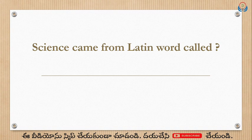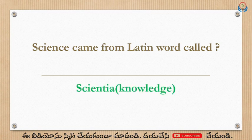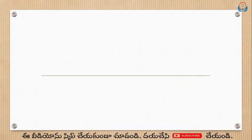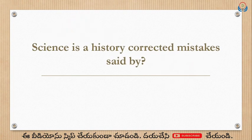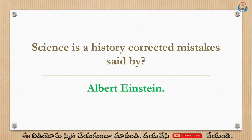Science comes from the Latin word. What is that Latin word? The answer is 'scientia.' Scientia means knowledge. Also, 'Science is a history of corrected mistakes' — said by whom? The answer is Albert Einstein.